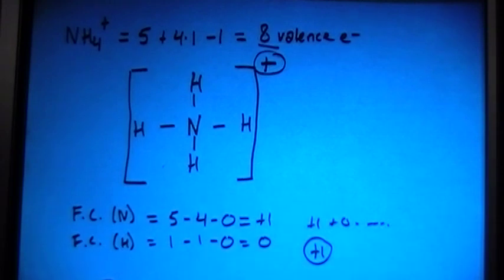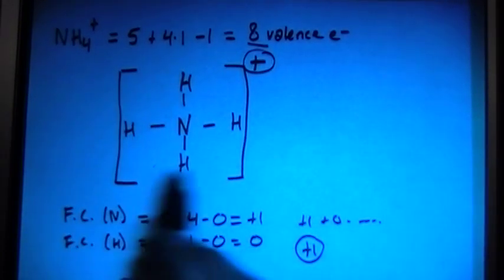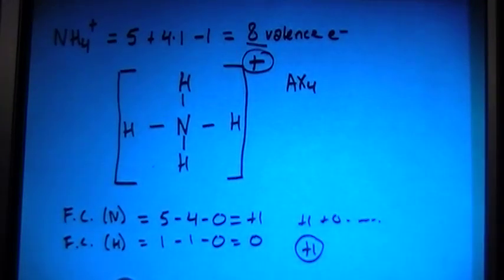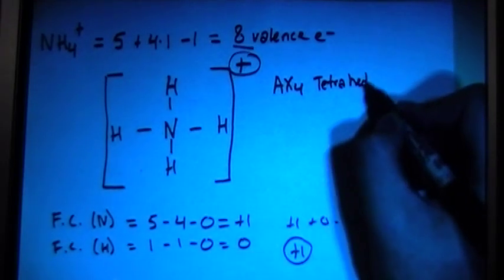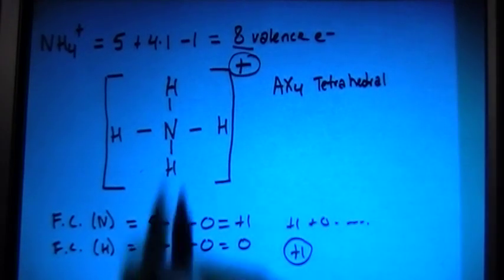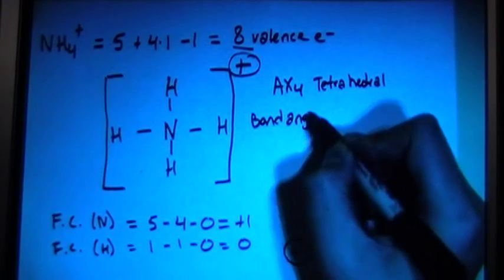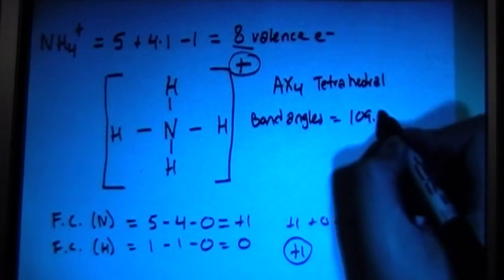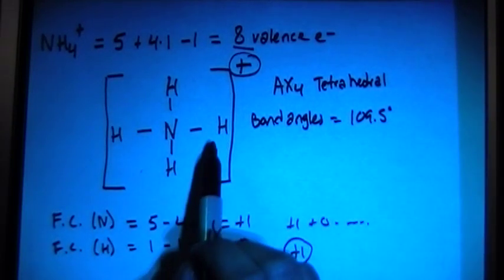So this is the correct structure, this is accurate, and we can go ahead and look at the shape. Since there's one central atom and four surrounding bonding sites, it's going to be an AX4 shape, which means it is a tetrahedral shape, because none of them are lone electron pairs, and the bond angles between each of the bonding sites is going to be 109.5 degrees, ideally.